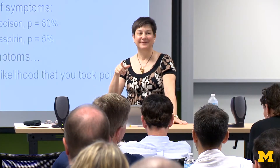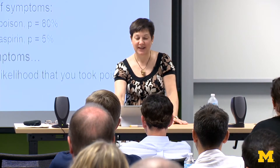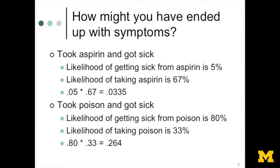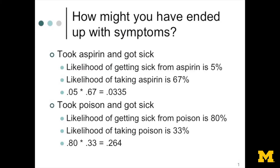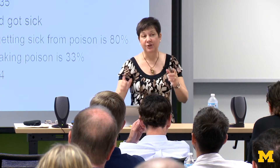If you took the poison, it's 80% likely you would have gotten sick. If you took the aspirin, it's only 5% probable that you get sick. So the question is: now that you have symptoms, what's the likelihood that you took the poison? The class guesses range from 33% to 50%. Let's think about the ways you could have ended up with symptoms. You took the aspirin and got sick: 5% times 67% = about 3%. You took the poison and got sick: 80% times 33% = about 26%.